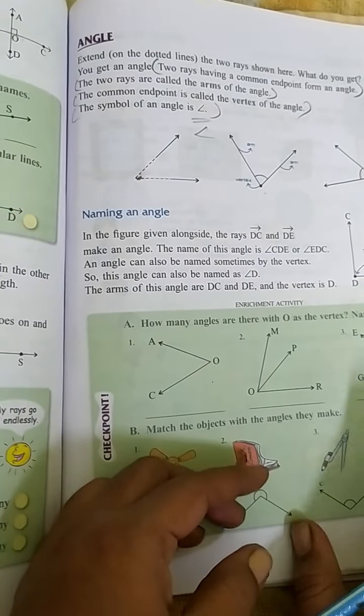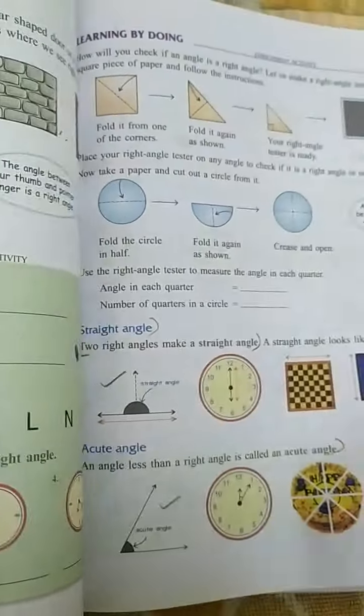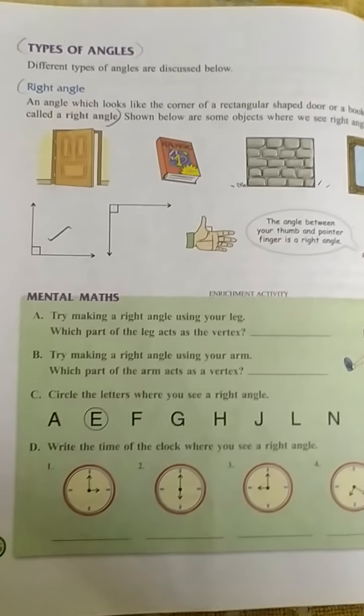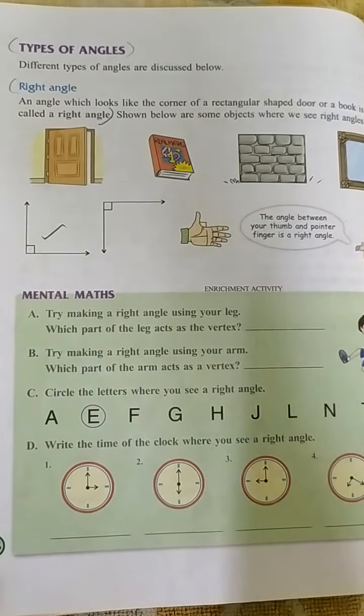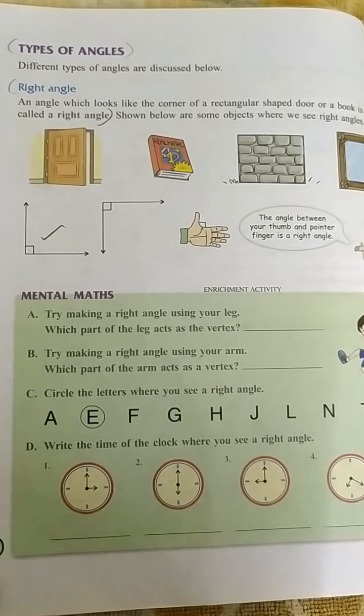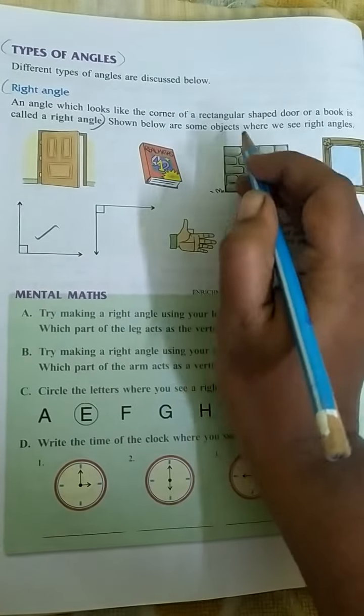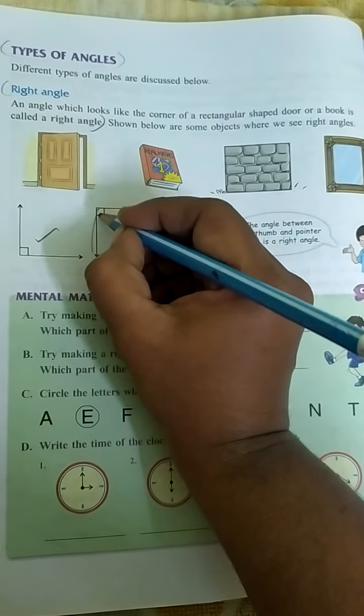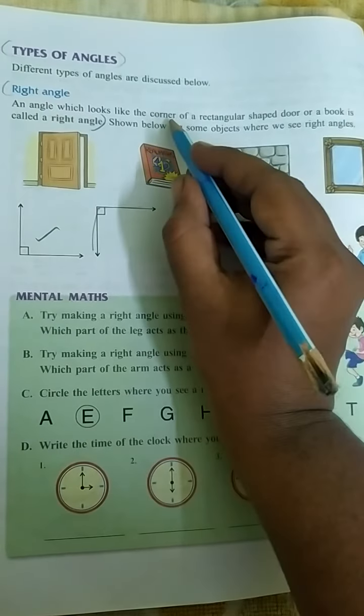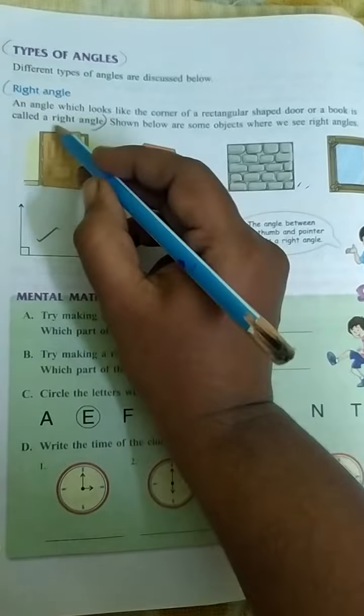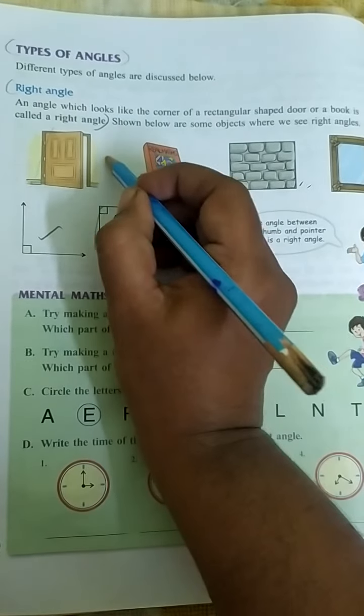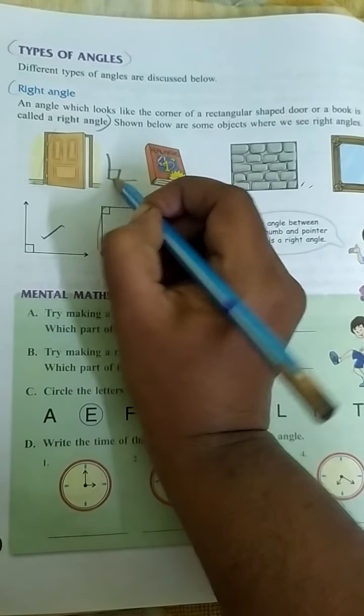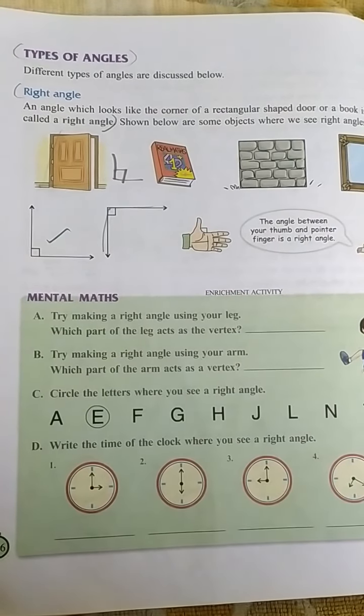We have the next topic, types of angles. You all know right angle, acute angle, obtuse angle. The basic types of angles. Right angle means it looks like this, two lines like the corner of a rectangular shaped door. Like L shape. This corner we denote as a right angle. It is 90 degrees.